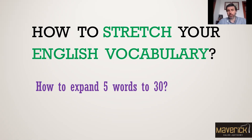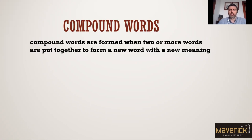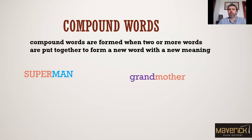In this mini video: how to expand five words to 30 words. How are we going to do it? Well, we will use compound words. Compound words are formed when two or more words are put together to form a new word with a new meaning. Here are a few examples of compound words: superman, friend, mother, basketball, grasshopper.